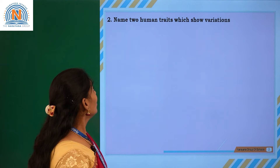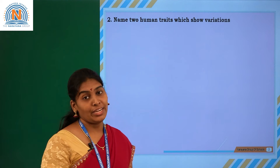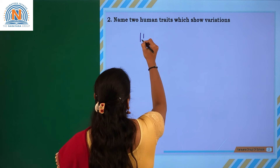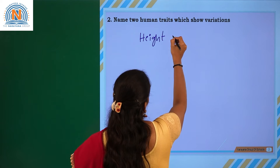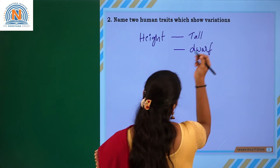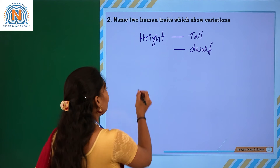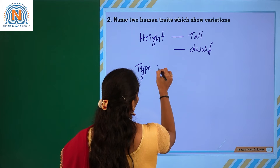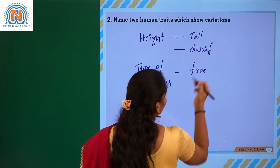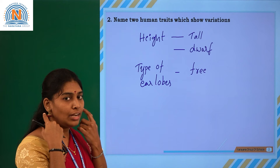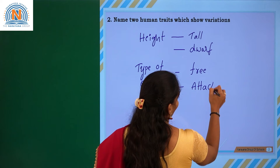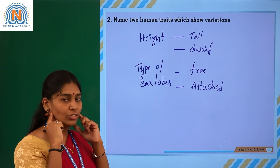The next question is: name two human traits which show variations. There are a number of traits we can take. First, height — in humans, there are two characters: tall and dwarf. Second, type of ear lobes. Some people have free ear lobes, which are not attached, and some people have attached ear lobes connected to the jaw.